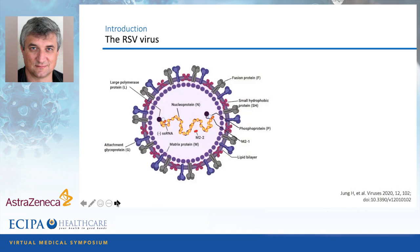The RSV virus is a single-stranded RNA virus and that genome encodes for a couple of important proteins. First, the G protein assists the virus in attaching to the epithelial lining cells of the airway. Then there's the F protein, the fusion protein. It assists the virus in integrating into the airway epithelial cell, and it also allows that infected cell to merge or form a syncytium with neighboring uninfected epithelial cells.